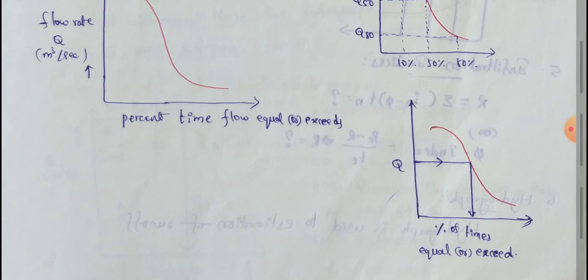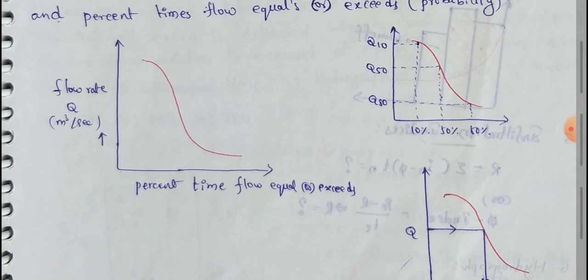In this video we covered these types of streams: perennial, non-perennial, ephemeral, effluent streams, influent streams, and the flow duration curve. Please like this video and subscribe to the channel. Thanks for watching.